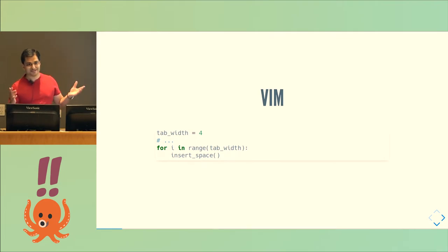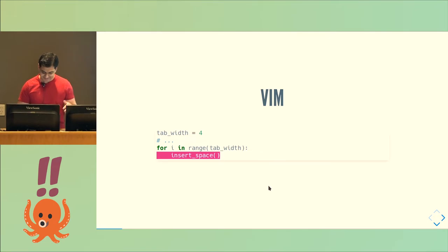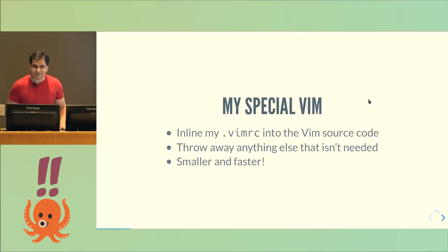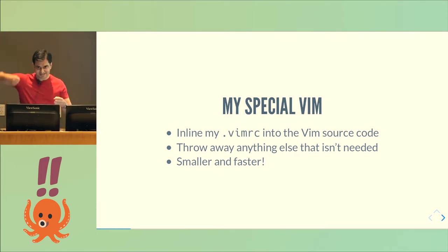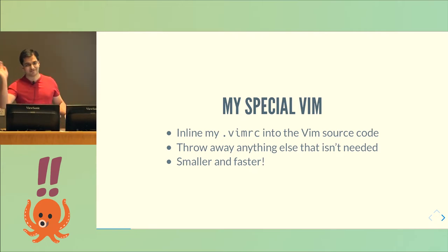This is the kind of code I would imagine is inside Vim that goes: okay, someone set the tab width to 4 — just handle it and insert the number of spaces accordingly. So I keep thinking: wouldn't it be cool if I could just take Vim and my VimRC, jam my VimRC into Vim, and do a whole bunch of inlining, unrolling, and simple stuff, and throw away everything else I will never use?